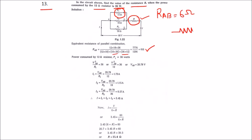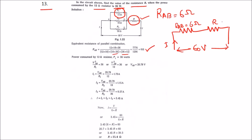In the simplified figure, there are two resistances connected in series with a supply voltage of 60 volts and current I. This is R_ab with 6 ohms, and R is what we have to find.